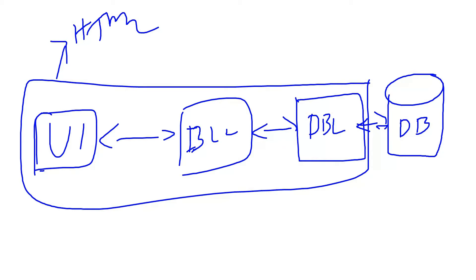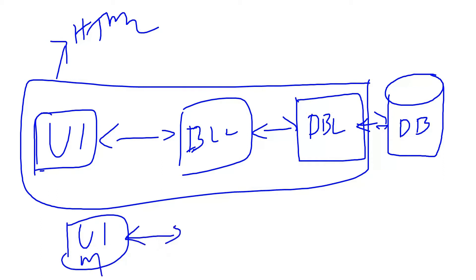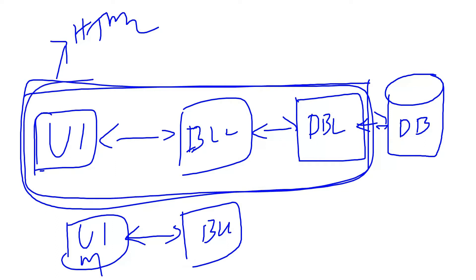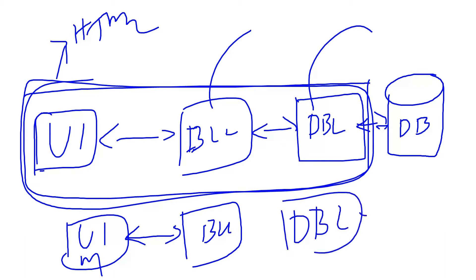But if I want to build a mobile application, I need to build a UI for mobile. This UI is for my mobile, and at the same time, I need to build the business logic layer again for my mobile application. Because we have built this application as a single application, we cannot take this out. That's why we need to build these components again so that we can communicate with the database.